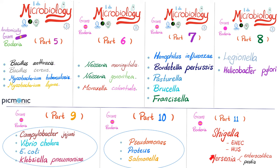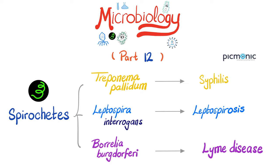Salmonella causes bloody diarrhea, just like Shigella and enterohemorrhagic E. coli. Yersinia enterocolitica causes gastroenteritis also with bloody diarrhea, but Yersinia pestis causes the Black Plague. Today we will talk about bacteria that look like spirals — i.e., spirochetes. These include Treponema pallidum causing syphilis, Leptospira interrogans causing leptospirosis, and Borrelia burgdorferi causing Lyme disease. Syphilis has three stages: primary, secondary, and tertiary.